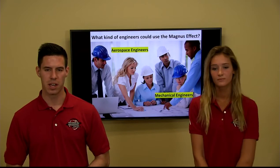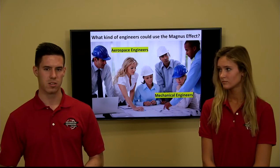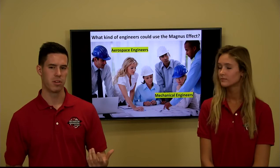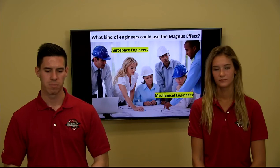Another type is mechanical engineers, who use their knowledge of mechanical processes to make engines, cars, ships, and planes more efficient. A mechanical engineer could use the Magnus effect by designing more efficient engines — for example, working with the rotor ship concept: an aerospace engineer might design the large mast-like cylinders, while a mechanical engineer designs the engine that makes those masts more efficient.